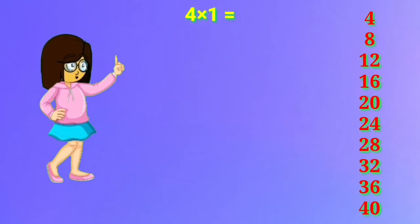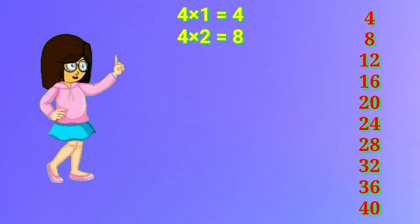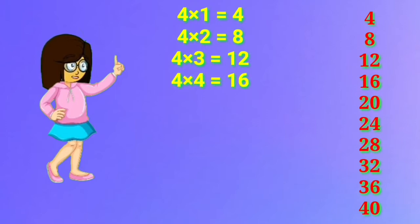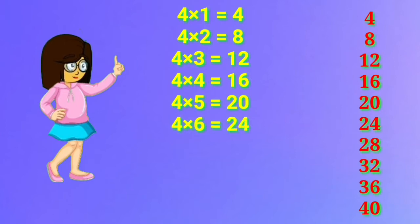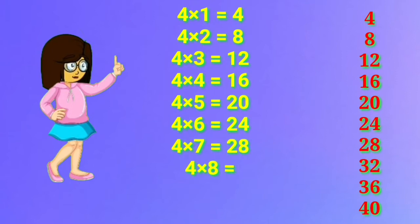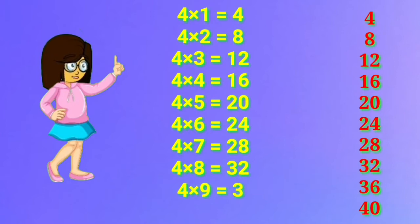4 one's are 4. 4 two's are 8. 4 three's are 12. 4 four's are 16. 4 five's are 20. 4 six's are 24. 4 seven's are 28. 4 eight's are 32. 4 nine's are 36. 4 ten's are 40.